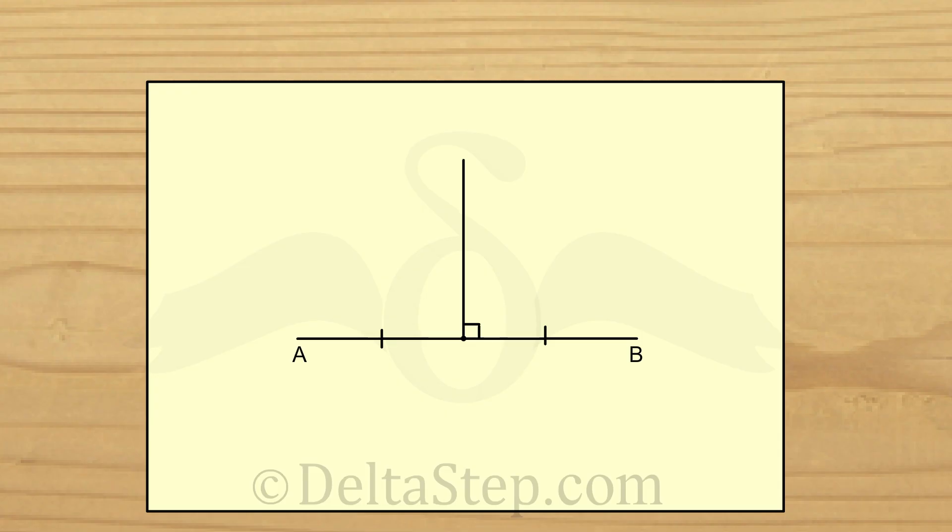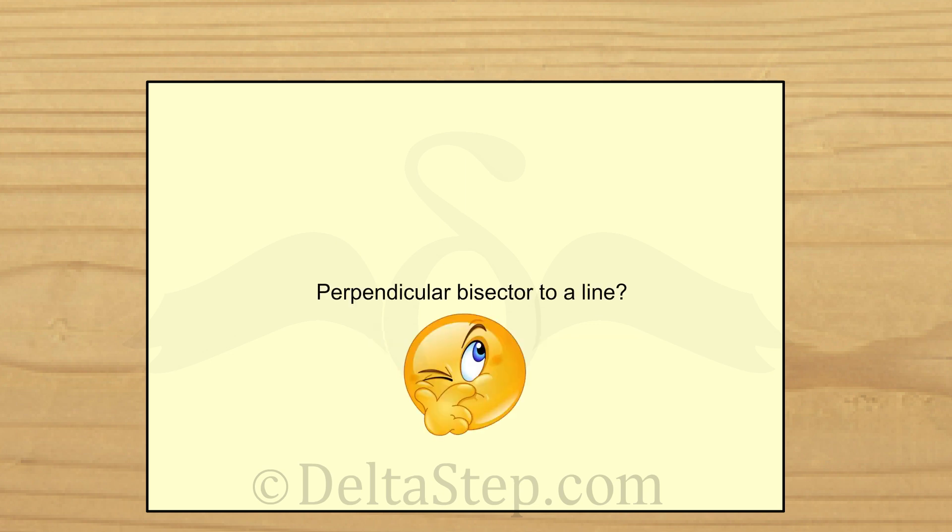We have already learnt how to construct a perpendicular bisector of a line segment. Can we draw a perpendicular bisector to a line? Well, we can draw a perpendicular to a line but we cannot really bisect a line.